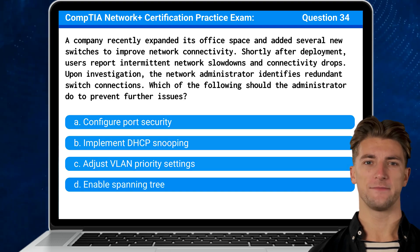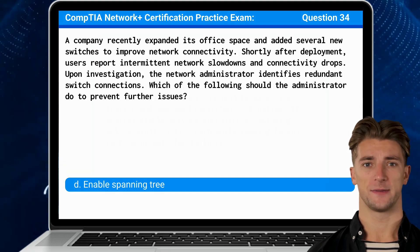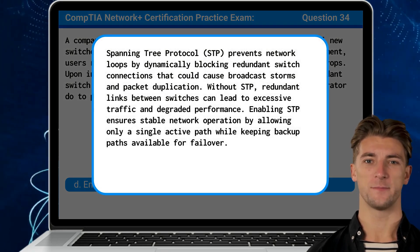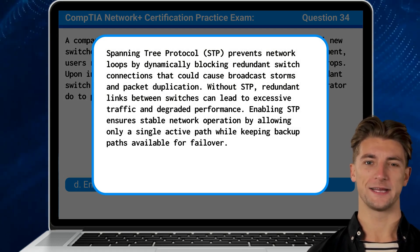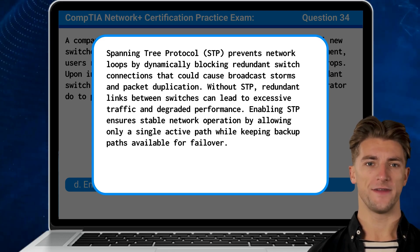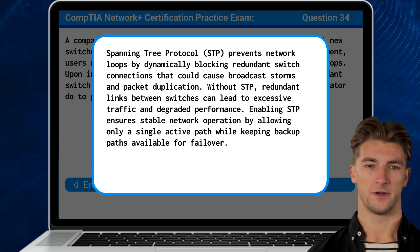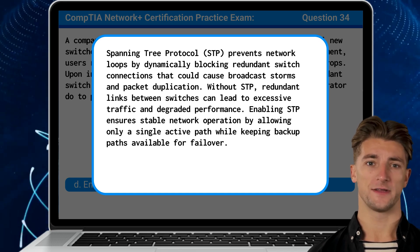The answer is D: Enable Spanning Tree. Spanning Tree Protocol, or STP, prevents network loops by dynamically blocking redundant switch connections that could cause broadcast storms and packet duplication. Without STP, redundant links between switches can lead to excessive traffic and degraded performance. Enabling STP ensures stable network operation by allowing only a single active path while keeping backup paths available for failover.